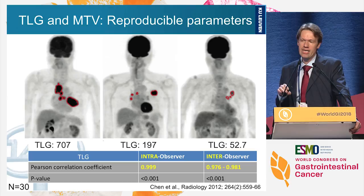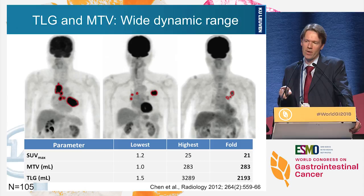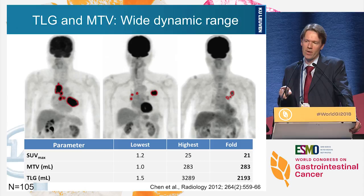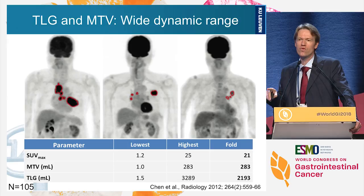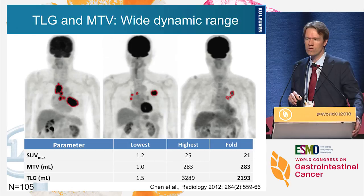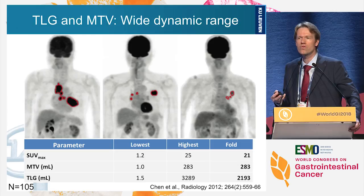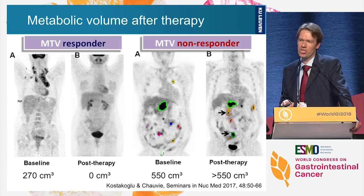This metric is very reproducible: intra- and inter-observer reproducibility values are above 0.99 and 0.975 respectively. Notably, SUV max ranges from 1.2 to 25 — a range of 21 — while tumor volume in 105 quantified patients ranges from 1 to 283 mL (range of 283), and total lesion glycolysis ranges from 1.5 to over 3000 — a range of more than 2000. This large dynamic range means patients have many possibilities for differentiation.